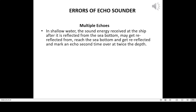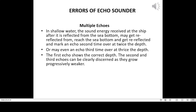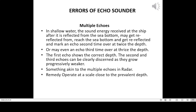Multiple echoes: in shallow water, sound energy received at the ship after reflecting from the sea bottom may get re-reflected and mark an echo a second time at twice the depth, or even a third time at thrice the depth. The first echo shows the correct depth. The second and third echoes can be clearly discerned as they grow progressively weaker — akin to multiple echoes in radar. Remedy: operate at a scale close to the prevalent depth.